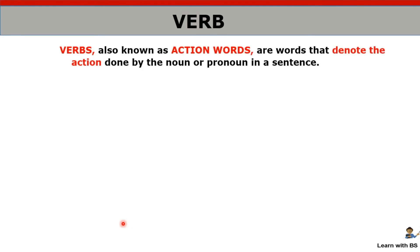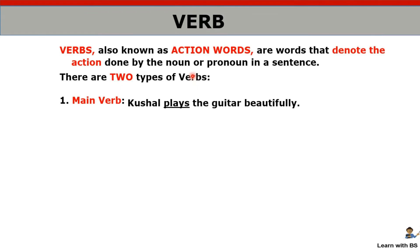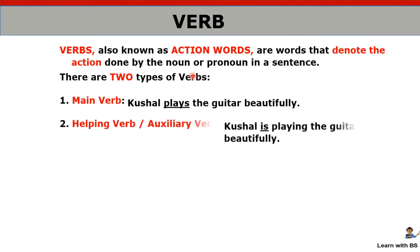Next we have verbs. Verbs are nothing but action words — they denote any action: eating, drinking, writing. We have two types of verbs: one is main verb, and the other is helping verb, which we also call auxiliary verb. Main verb tells both the action and the time. Auxiliary verb helps the main verb to indicate the time of the action.